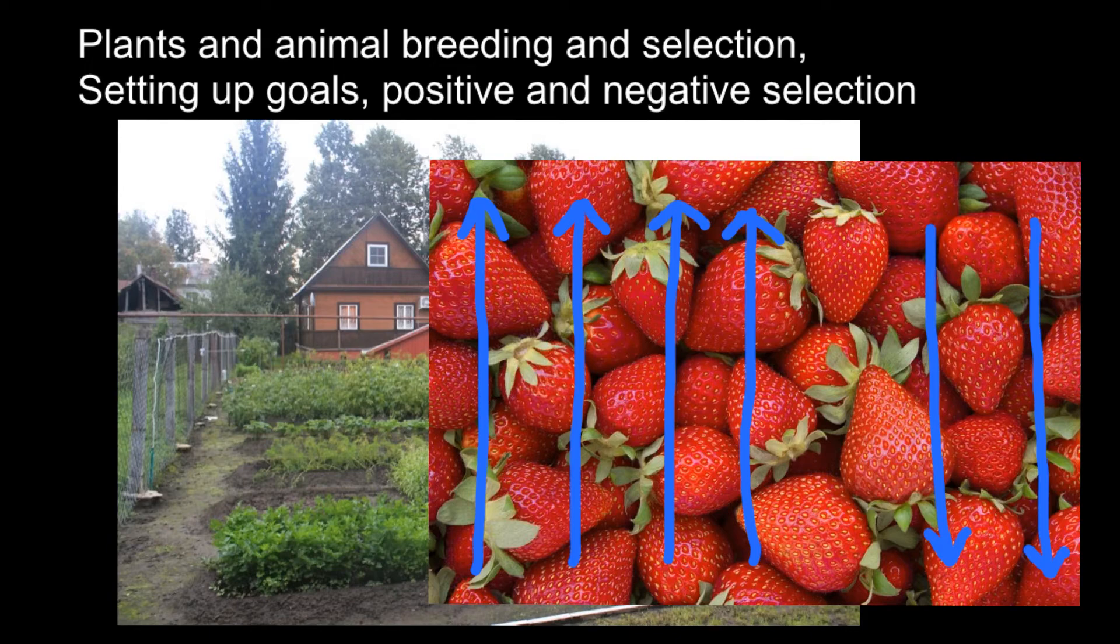When we moved to United States, my wife complained that there are so many imported products from China, many of them fake. But she complained how they can fake natural products like strawberries that look like strawberries, but don't taste like strawberries. And here's the explanation. So even before you would start your breeding and selection process, you need to set up right and correct goals.